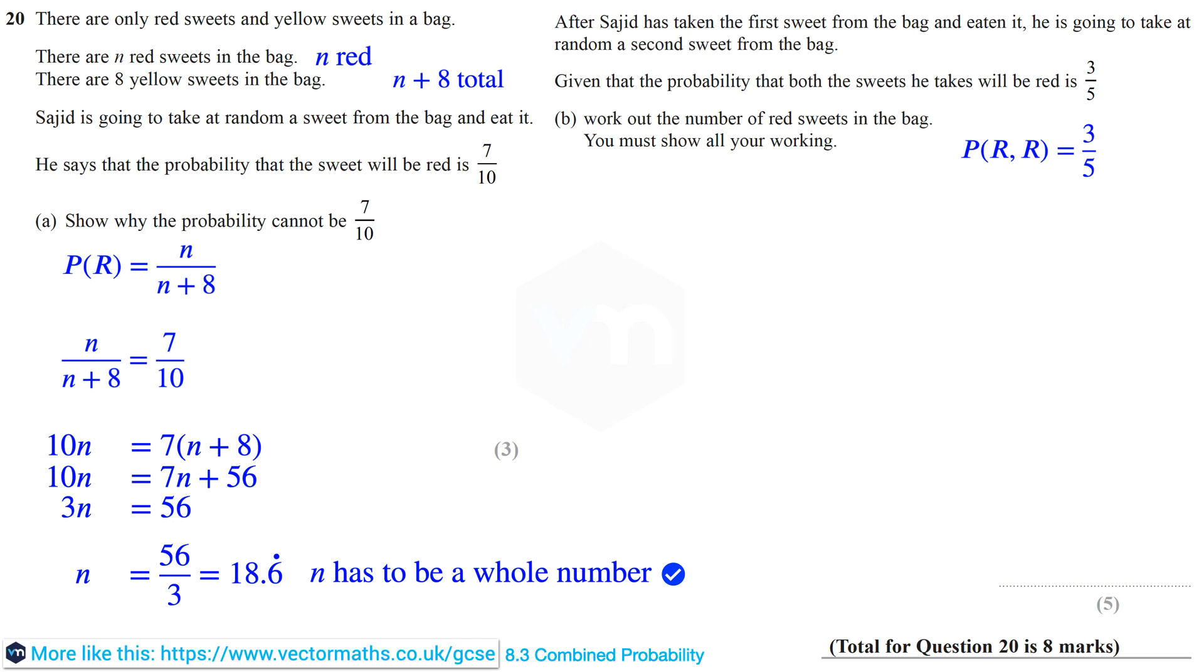Okay, so the probability of obtaining a red then a red we've been told is 3 fifths. Now of course after he takes the first sweet, this suggests we have a without replacement situation. So although there were N red sweets to start with, out of a total of N plus 8 sweets, when he goes to randomly select a second sweet there will be N minus 1 red sweets out of a possible total of N plus 7 sweets.